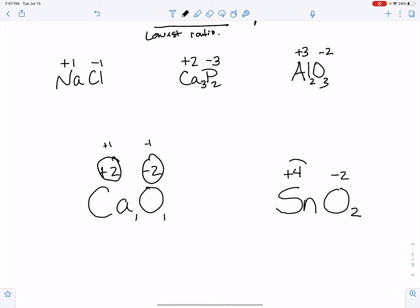And another example of this is here. This is not Sn2O4. See, those aren't the lowest ratios. We're all about low ratios here in chemistry. So you would have to simplify, kind of like that, and make it SnO2.